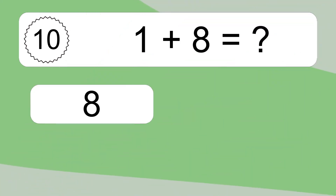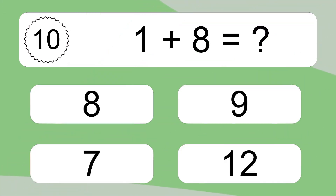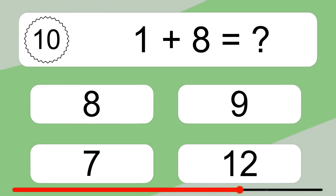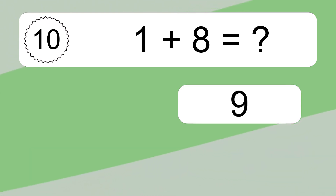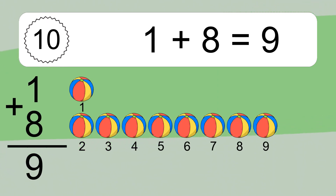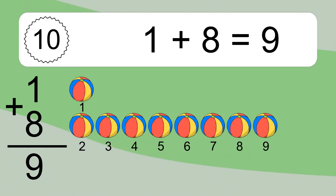1 plus 8 equals what? 1, 2, 3, 4, 5, 6, 7, 8, 9. Let's count it. 1, 2, 3, 4, 5, 6, 7, 8, 9.